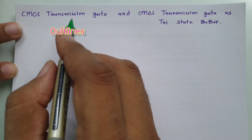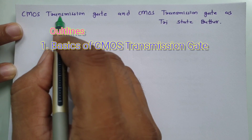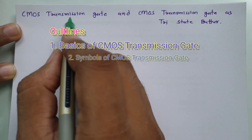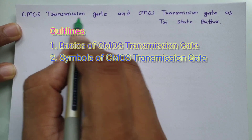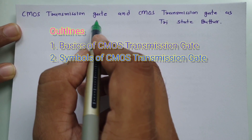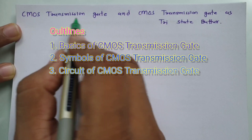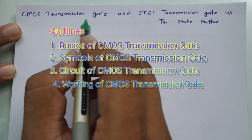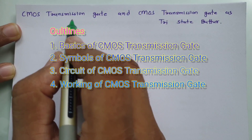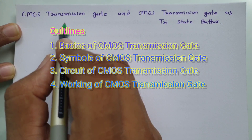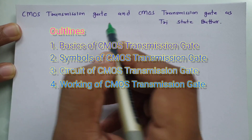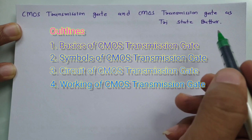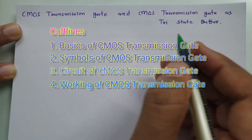First I'll explain what is CMOS transmission gate, what are the symbols of CMOS transmission gate, then we will see its structure and then we will see how CMOS transmission gate is working as a tri-state buffer.